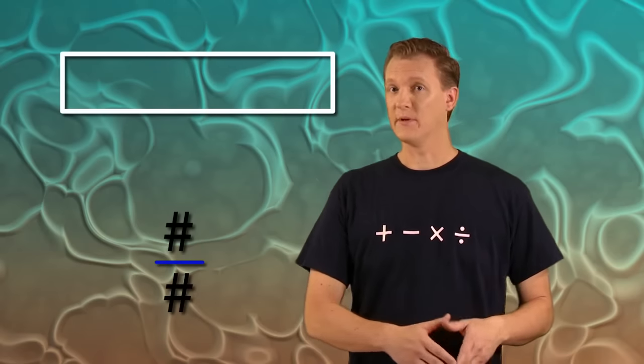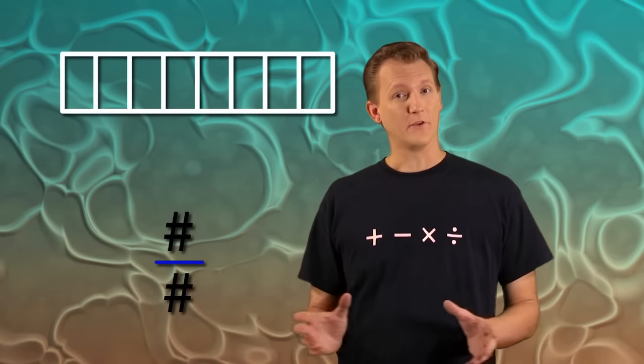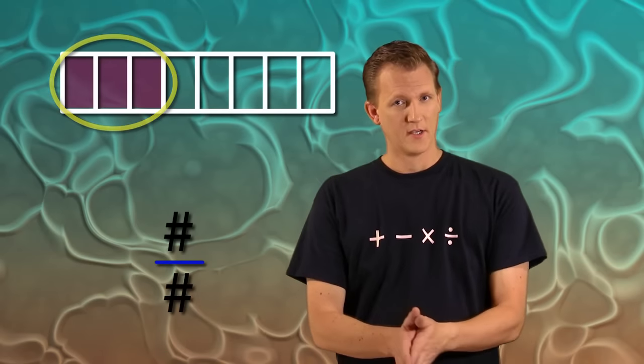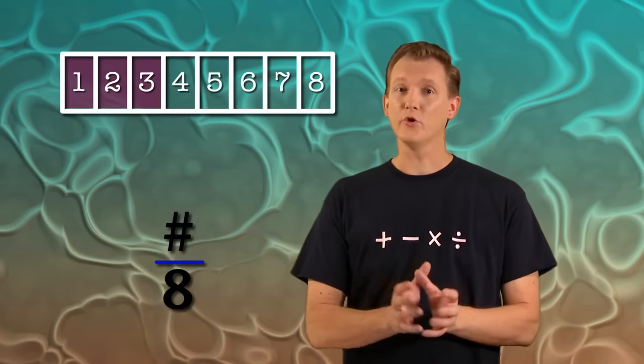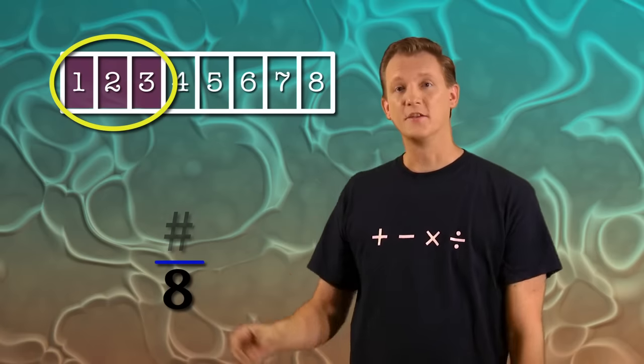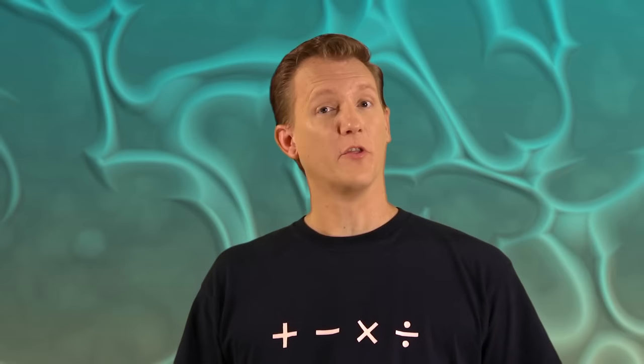Let's try another example. Let's say that I divide a rectangle up into eight parts, and I give you three of those parts. Since the total number of parts is eight, the bottom number will be eight. And since you have three of those parts, the top number will be three. So the fraction I'm giving you is three over eight, or three-eighths of the rectangle.